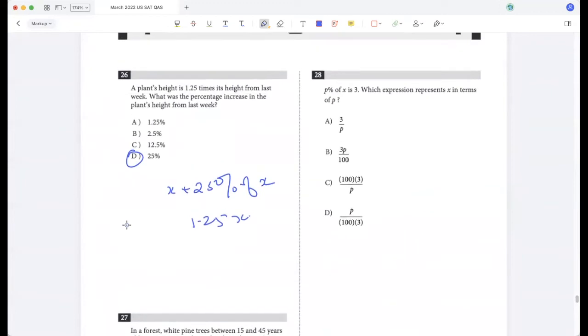P percent of x is 3. Which expression represents x in terms of p? P percent of x is 3, so p by 100 times x is 3, so x is 300 by p.